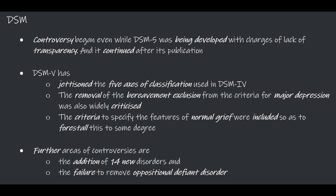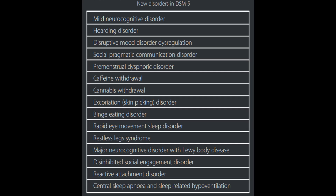DSM-5. Controversy began even while DSM-5 was being developed, with charges of lack of transparency, and these only continued after publication. DSM-5 has jettisoned the 5-axis classification used in DSM-4. The removal of the bereavement exclusion from the criteria of major depression was also widely criticized. Further areas of controversy include the addition of 14 new disorders and the failure to remove oppositional defiant disorder.